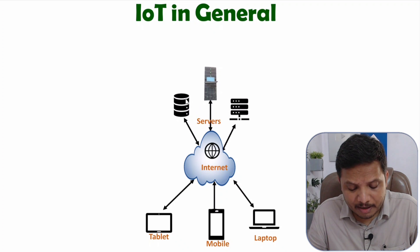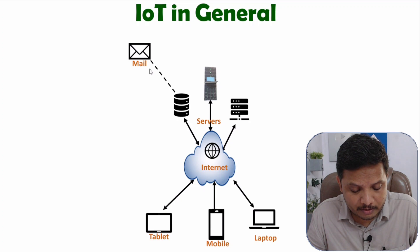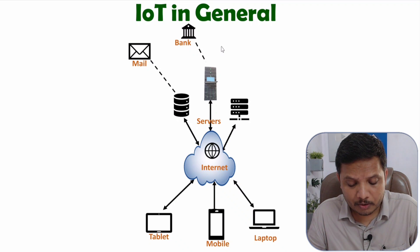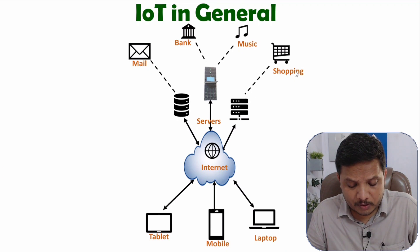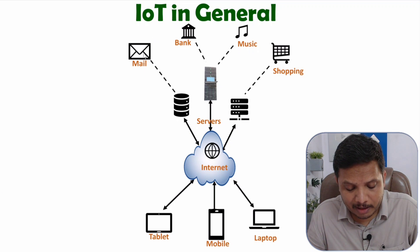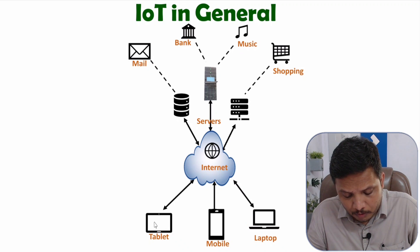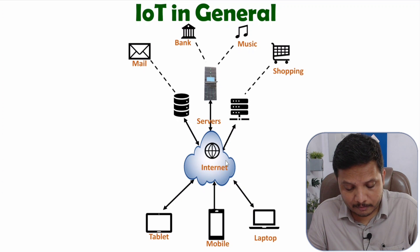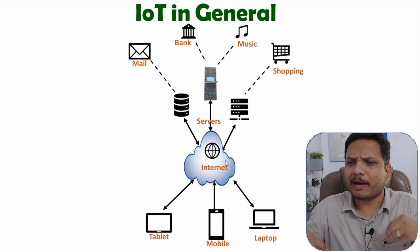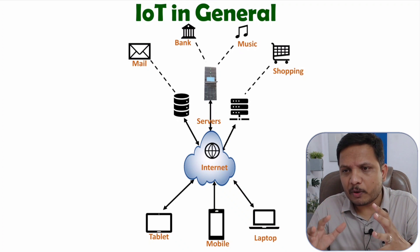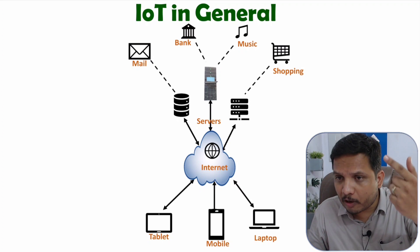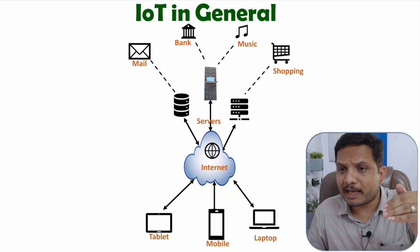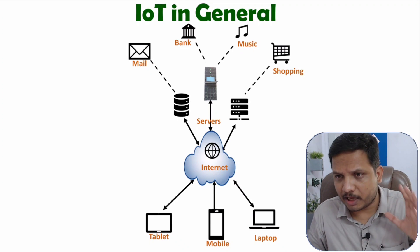With the use of servers there can be varieties of applications like email service, banking, music, video, and shopping applications. These applications are available with different companies and users can use these services with the use of internet. But in IoT we are having more varieties of applications — devices will be sensing some data, that data will be uploaded on the internet, and from internet any user can access that data to optimize any application.